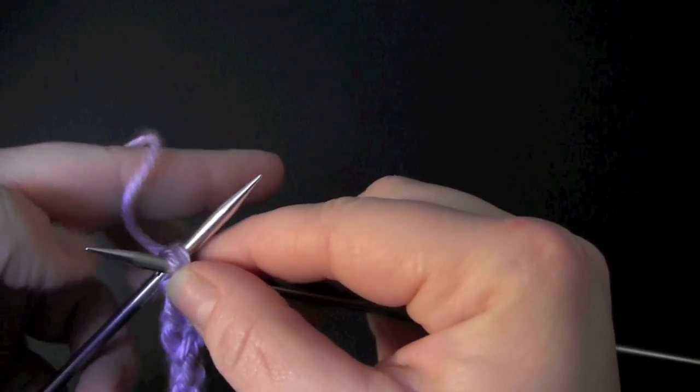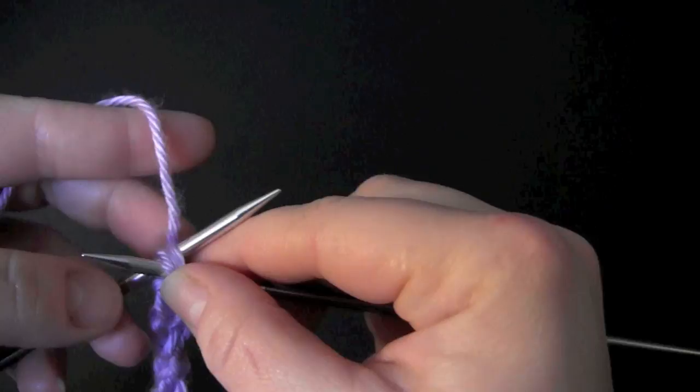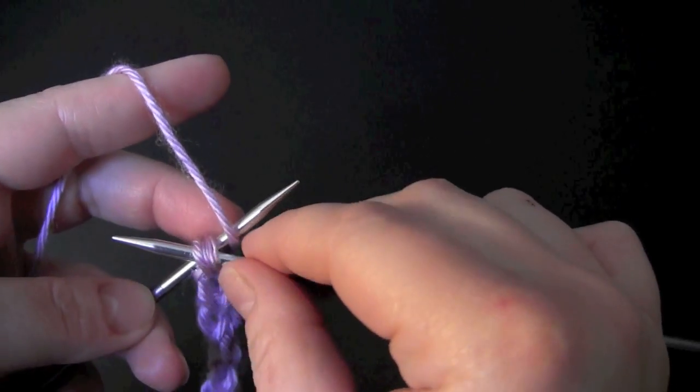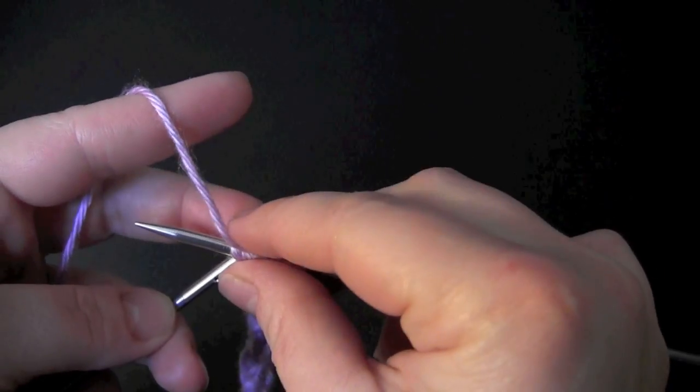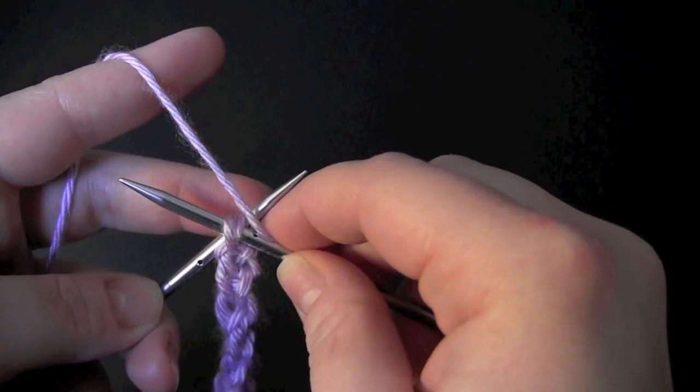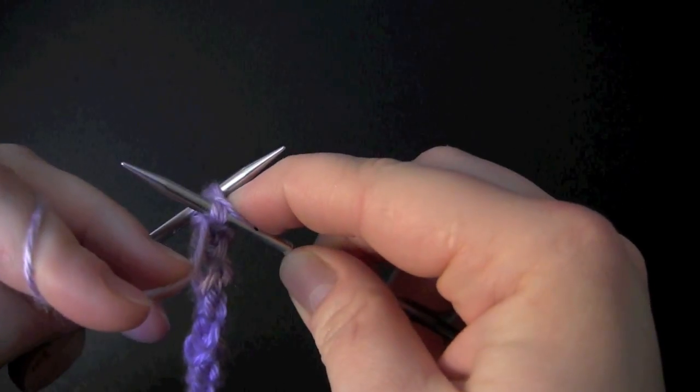Then you're going to bring your yarn around to the front, and I think it's easiest if I hold the working yarn down with my right index finger, and then purl them together.